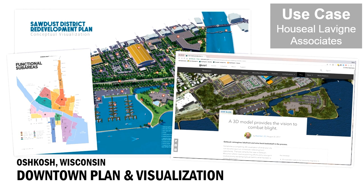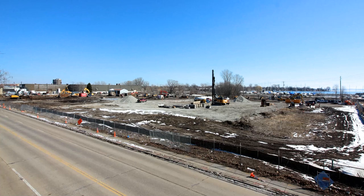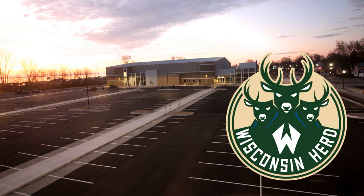In Oshkosh, Wisconsin, we were hired to help visualize their waterfront and given about a week to do it. They called it the Sawdust District — where they made furniture — and they mentioned the Milwaukee Bucks were looking for a minor league basketball arena. Any community that could show what an arena would look like in their downtown could get a franchise. We built this 3D model in CityEngine in less than a day, and before we even finished the rest of the study, they were selected. The Milwaukee Bucks built an arena — now the home of the Wisconsin Herd, a minor league basketball team.